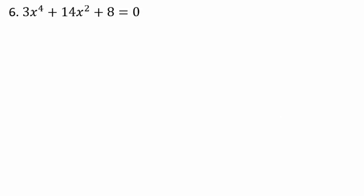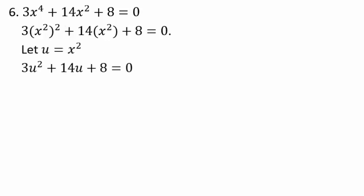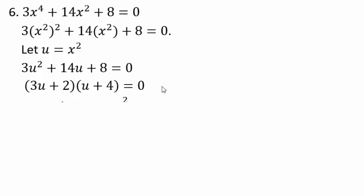Let's see what we got. We have x to the fourth and x squared, and we can see that x to the fourth is x squared, squared. So if we make u equals x squared, then we have 3u squared plus 14u plus 8 equals 0, which you can factor or use the quadratic formula for.